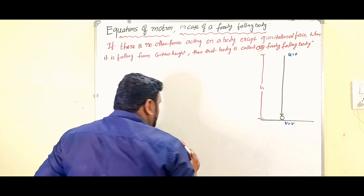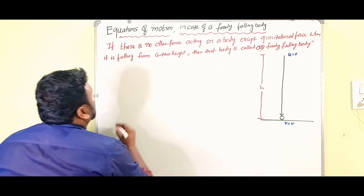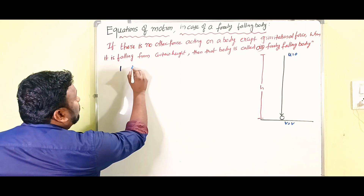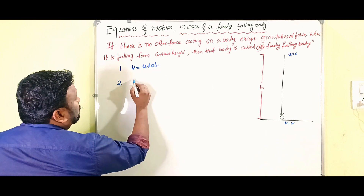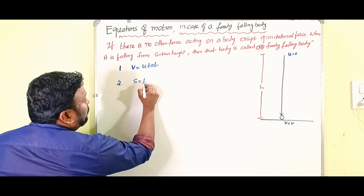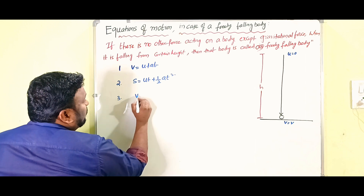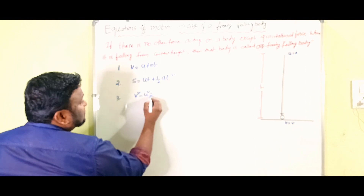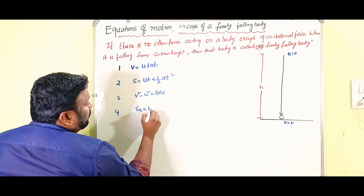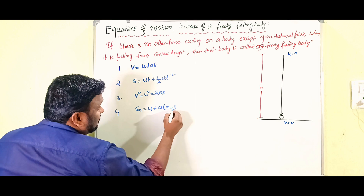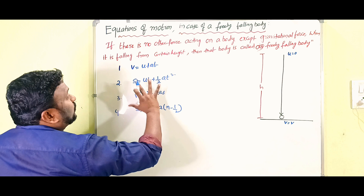You already have an idea about the equations of motion. The first equation is: v equals u plus at. The second equation is: s equals ut plus half at squared. The third one is: v squared minus u squared equals 2as. And the fourth one is: Sn equals u plus a of n minus half. These are the equations of motion.